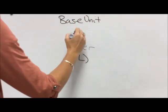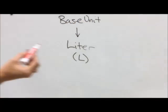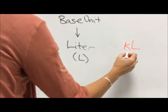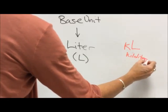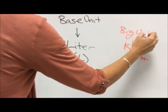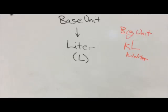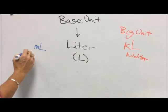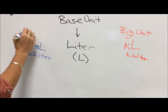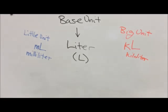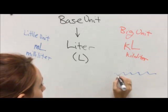The liter is our base unit. To it we can add the prefix kilo, which means one thousand, and that tells us that we're measuring large objects with kiloliters. We can also put a milli on the front—milli means a thousandth—so that's our little unit with milliliters.